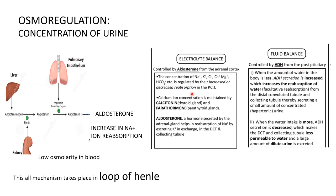The mechanism of aldosterone: when there is low osmolarity in the blood, the kidney releases renin. Renin converts angiotensinogen — released from the liver — into angiotensin I. The lungs convert angiotensin I into angiotensin II via angiotensin-converting enzyme. Angiotensin II stimulates the adrenal cortex to release aldosterone, which leads to increased ion reabsorption from urine into the blood. All this takes place in the loop of Henle.